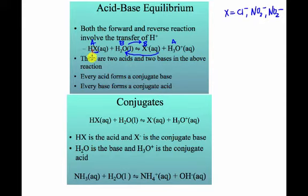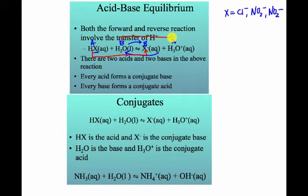Conjugate pairs are when an acid loses a hydrogen ion, it creates a base, and that base is the conjugate of the acid. Our base leaves behind an acid, and that acid is the conjugate of that base. So every acid has a conjugate base and every base has a conjugate acid.